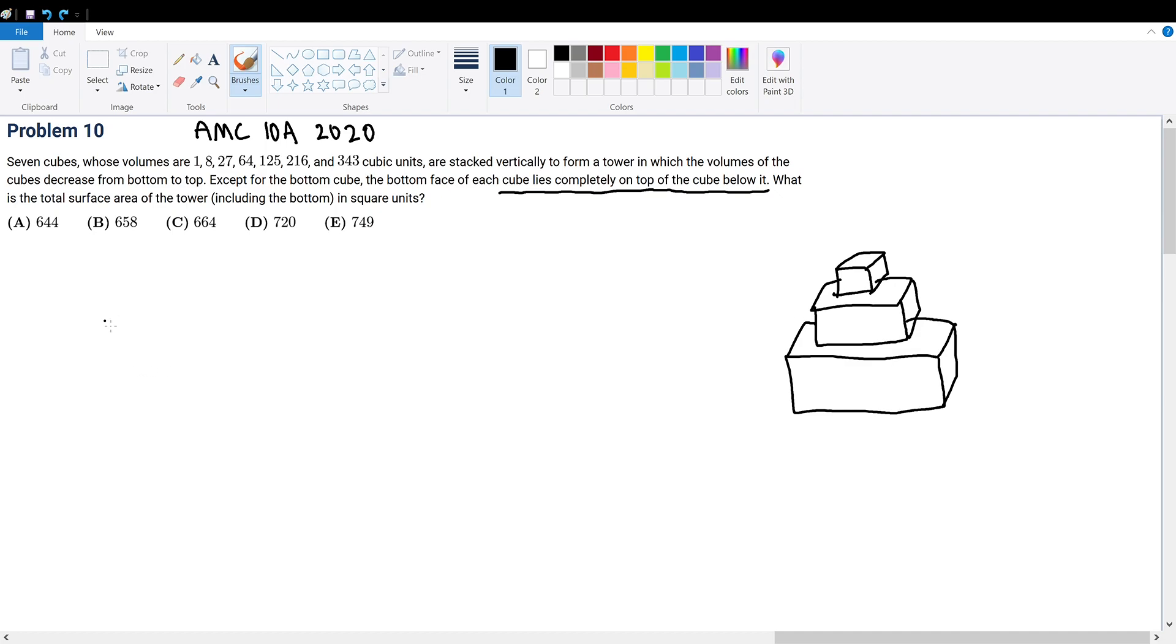We have the volumes of each cube. Since the volume of a cube is equal to its side length cubed, then the surface area is six times one of its sides squared. That means the side of each cube is equal to the cube root of its volume. We take the positive cube root of course.